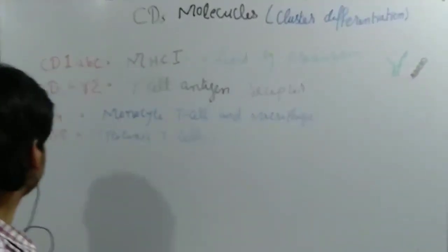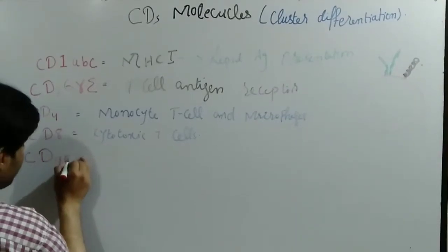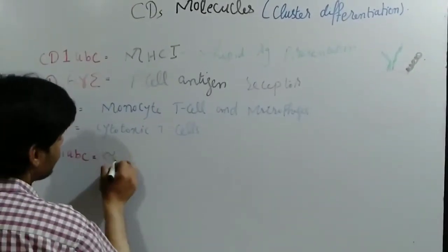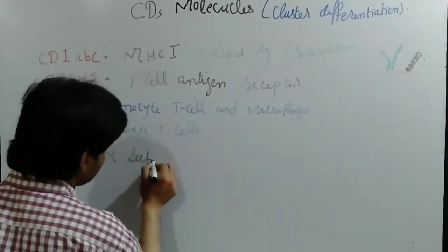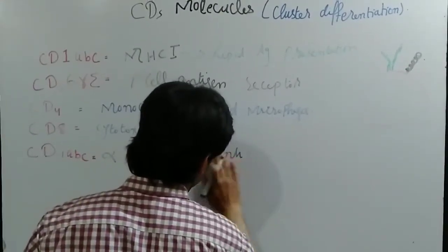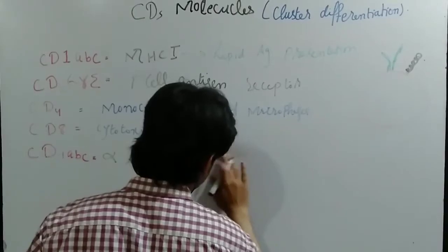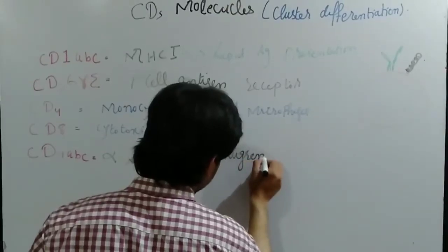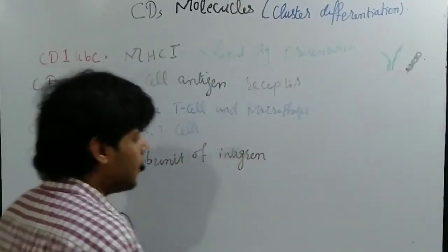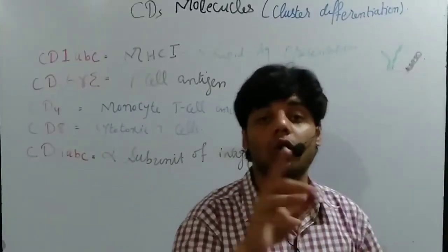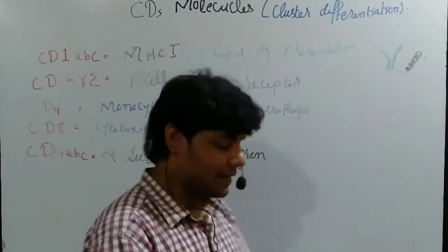Then we have CD11 A, B, and C. These are actually the alpha subunit of integrins — the alpha subunit of integrins — which are usually present on lymphoid stem cells and myeloid stem cells.